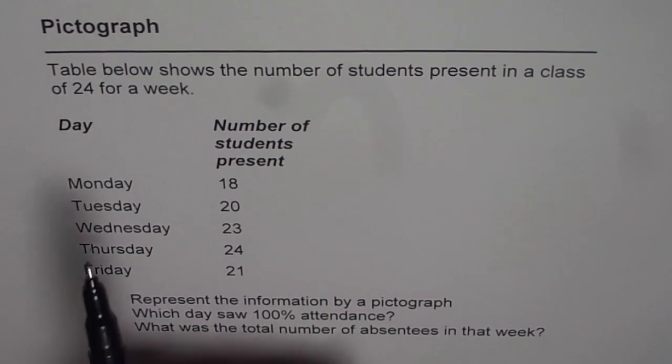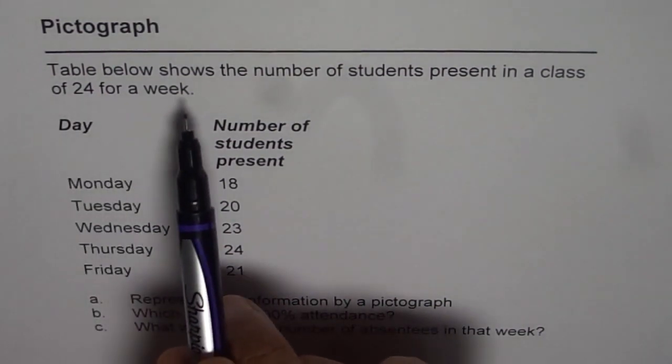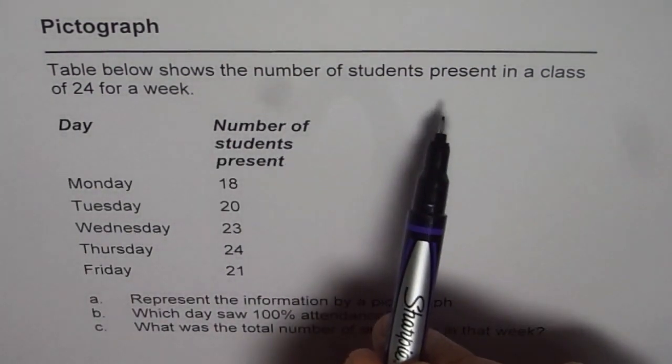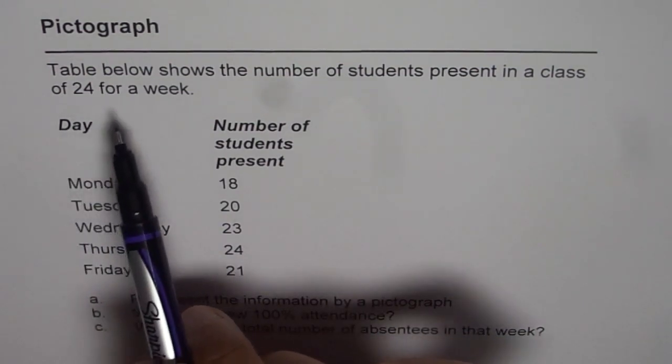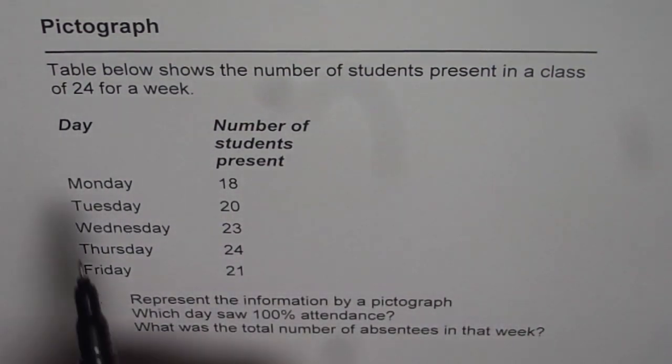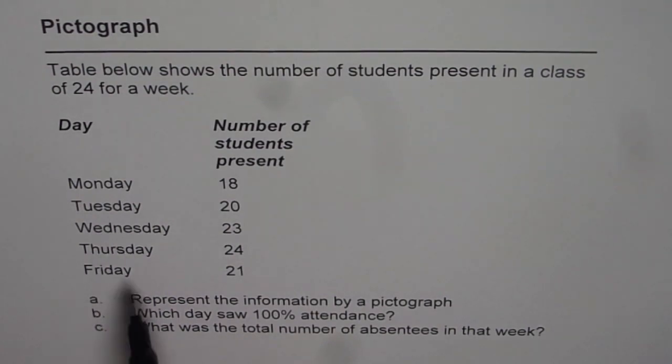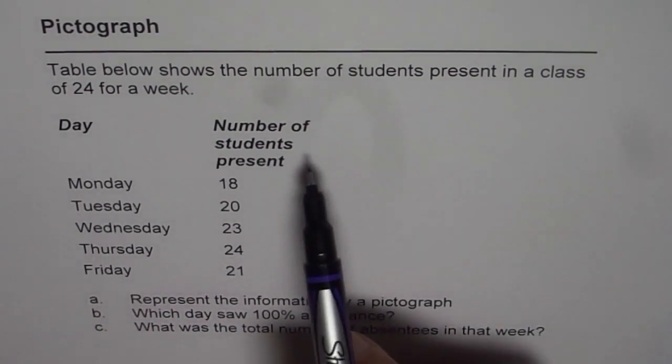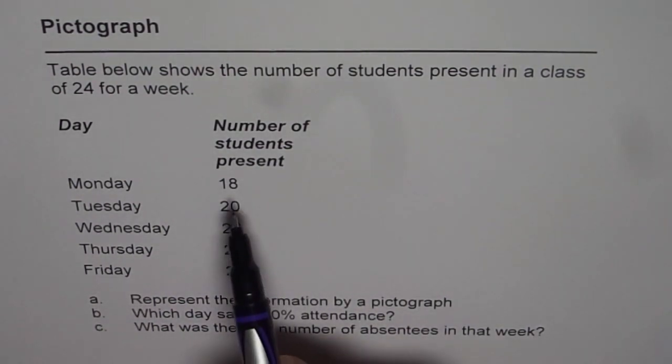The question here is: table below shows the number of students present in a class of 24 for a week. Days of the week are given: Monday, Tuesday, Wednesday, Thursday and Friday, and number of students present are 18,